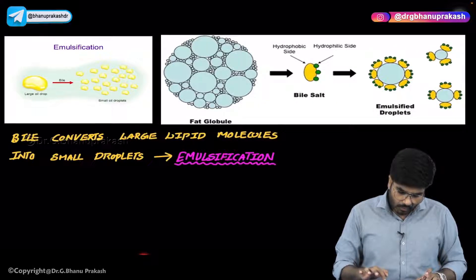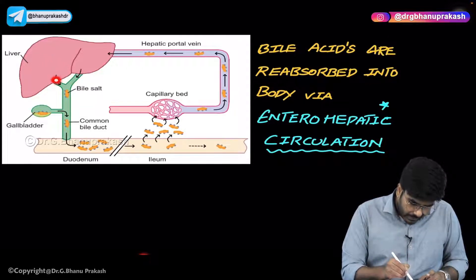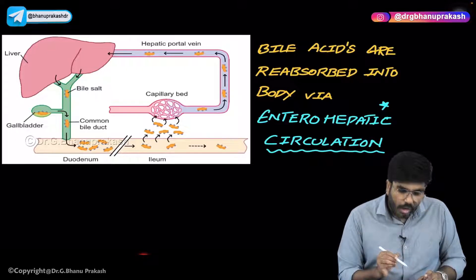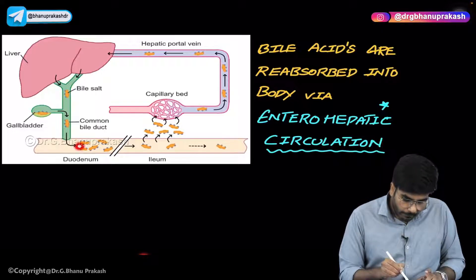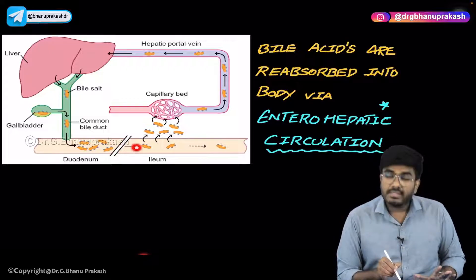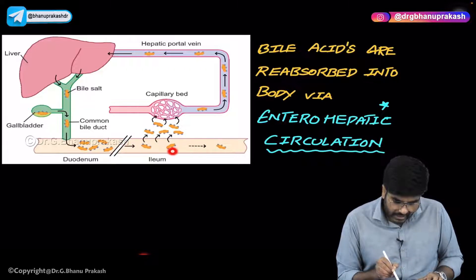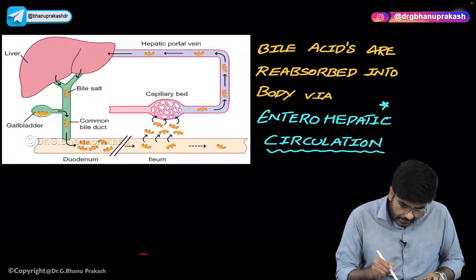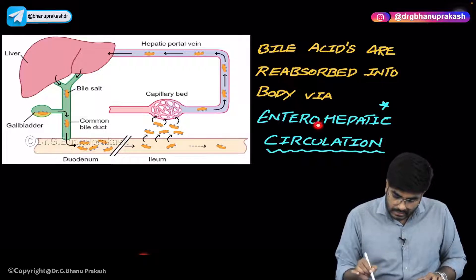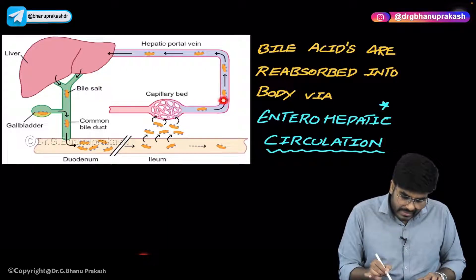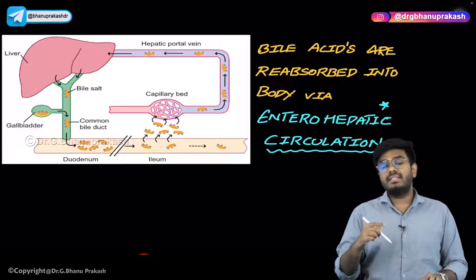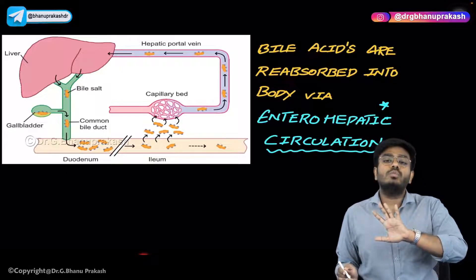Bile comes from the liver, is stored in the gallbladder, and then comes into the duodenum. In the duodenum, the bile acids help in the process of emulsification, and lipid digestion is done. These bile acids are very important substances for our body. Whenever they reach the ileum, the bile acids are reabsorbed back into the enteric circulation. This is known as enterohepatic circulation — the bile acids are reabsorbed and taken back to the liver, from the intestine to the liver. So normally you are not losing any bile acids.